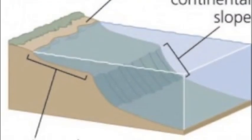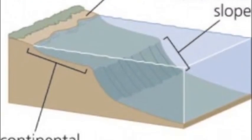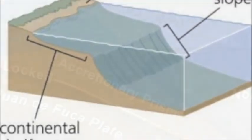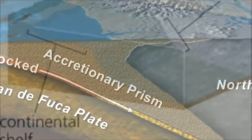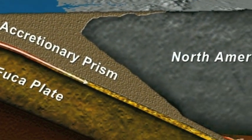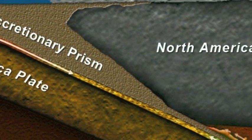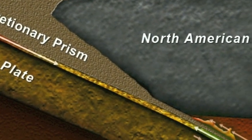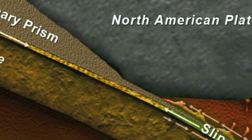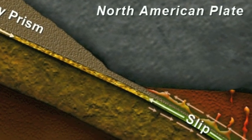In spreading center volcanism, the plates move away from one another and form ocean ridges. These two plates can also collide — this is called subduction zone volcanism — and a trench is formed and magma is produced.